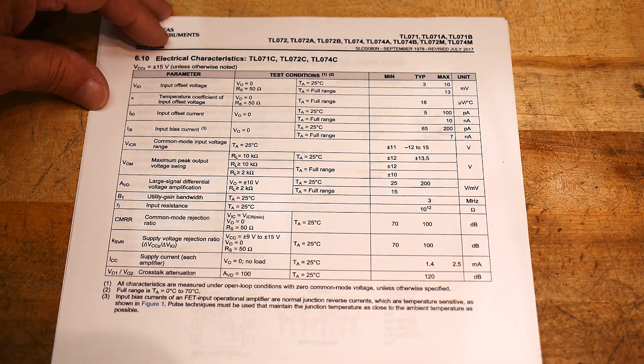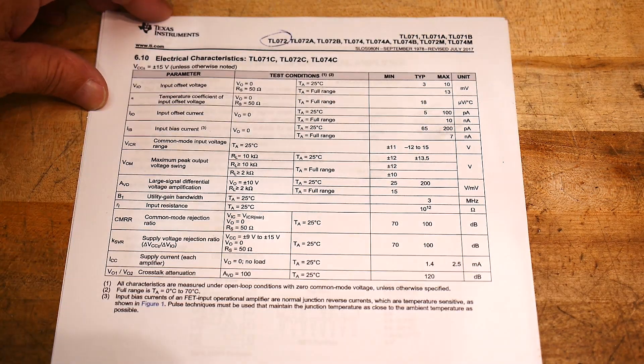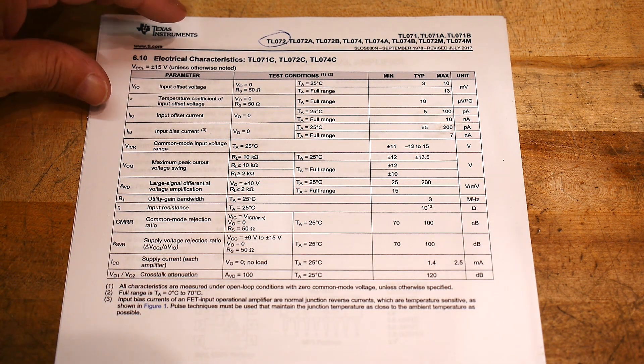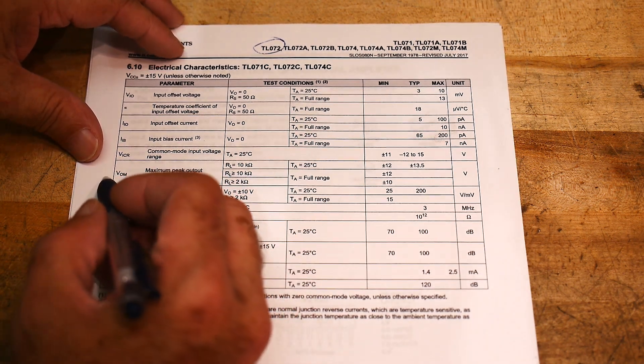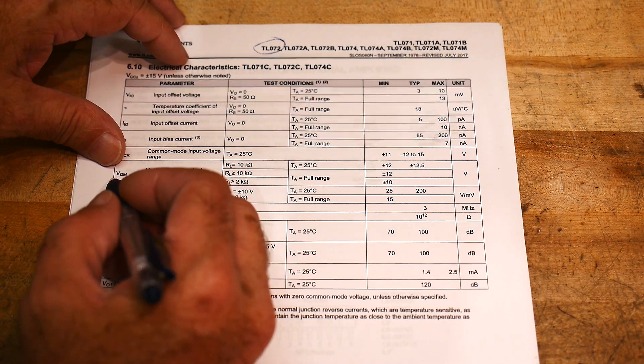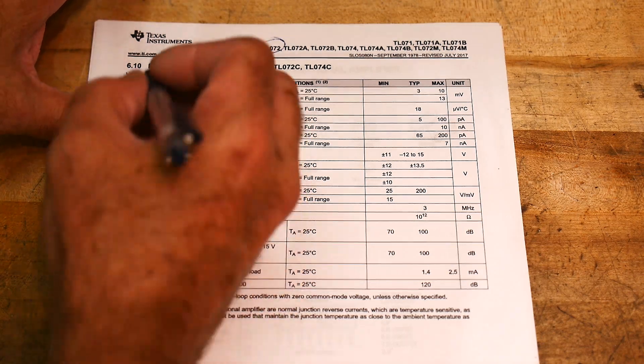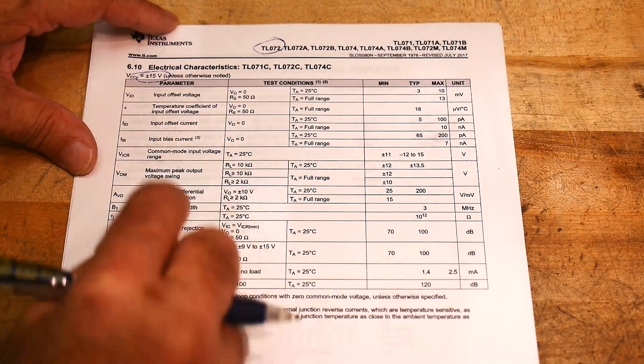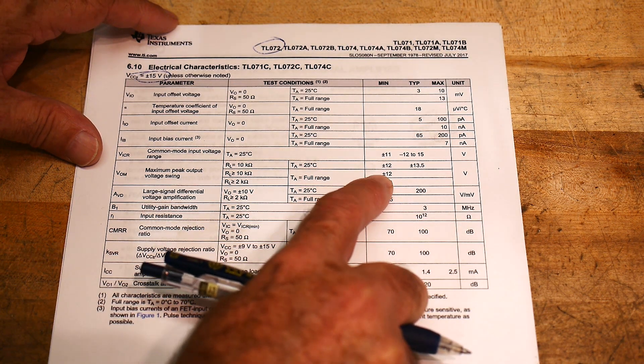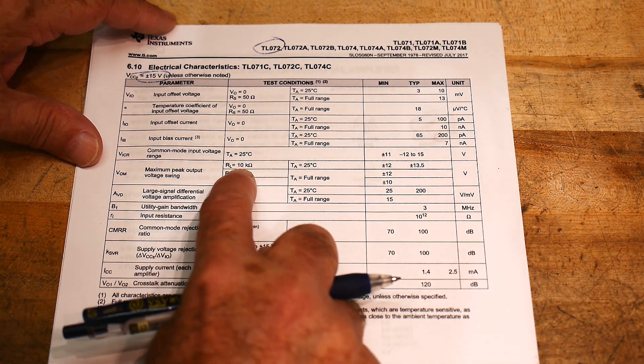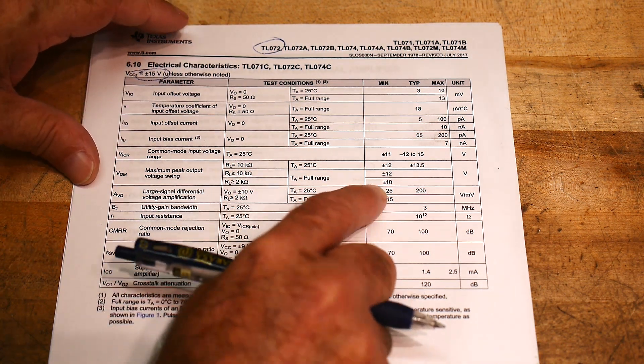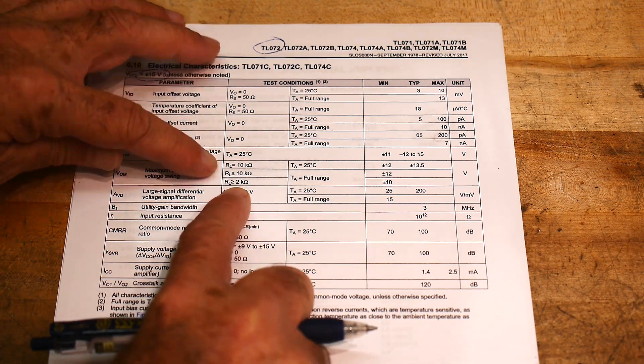So this is a TL072 datasheet. I looked all over for output current and there is no specification at all, so you have to actually go calculate it. There is a specification for output voltage. If you're operating the device at plus or minus 15 volts, then the output voltage is only plus or minus 12 volts. But that was with only a 10k load, so that's not much of a load at all. And here it drops down to plus or minus 10 volts if you have a 2k load.